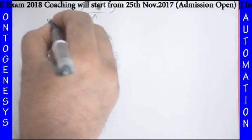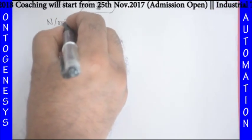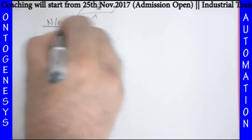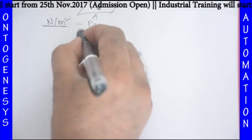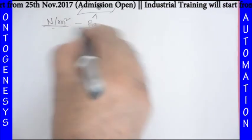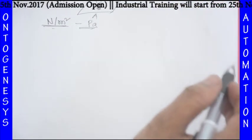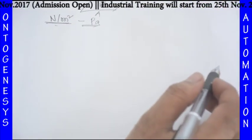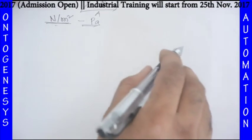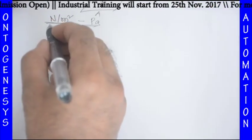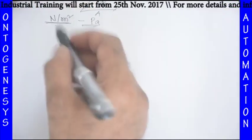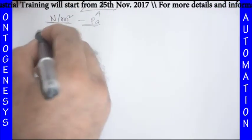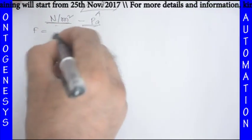What is the unit of pressure? Force is Newton and area is meter square, so Newton per meter square is your Pascal. Newton per meter square is called Pascal.